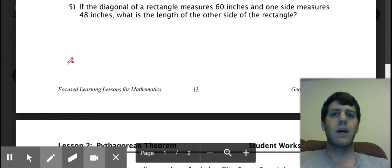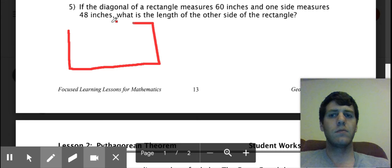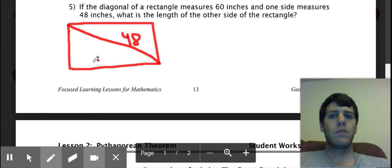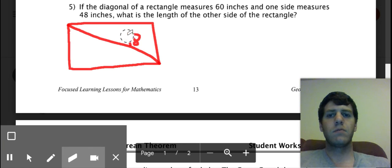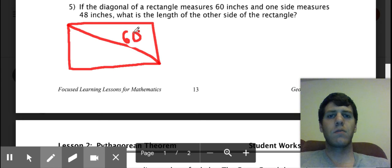Okay number five is the other one I want to do together. So the first thing you should do is draw it. So it says if the diagonal of a rectangle measures 60 inches and one side measures 48 inches, what is the length of the other side of the rectangle. So if you have a rectangle, okay, the diagonal here is going to be 48. I'm sorry, the diagonal is 60. Okay, the diagonal rectangle measures 60, one side measures 48.